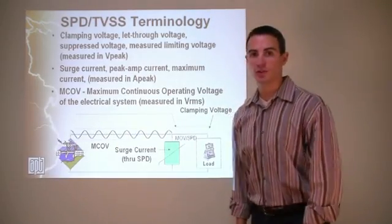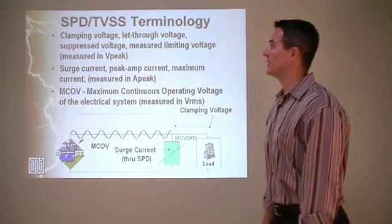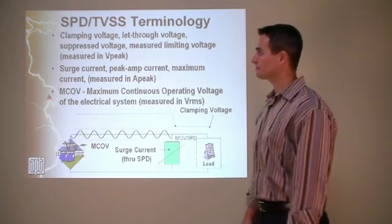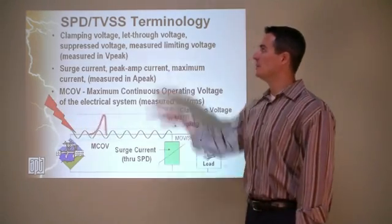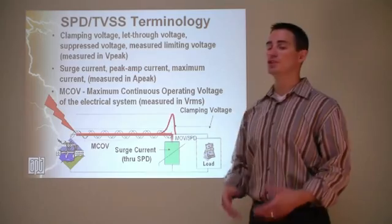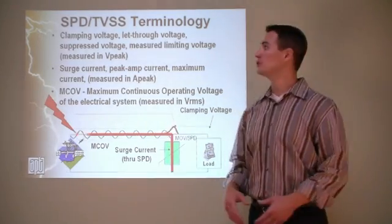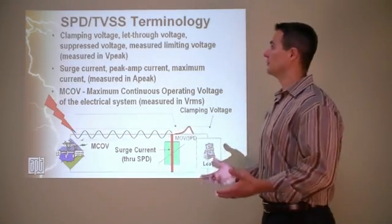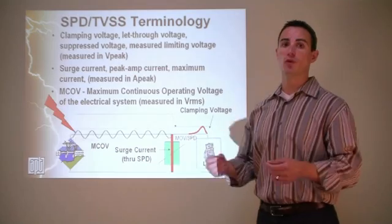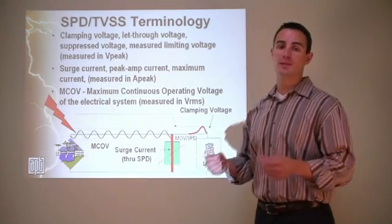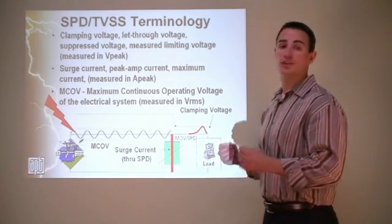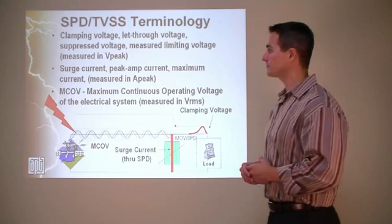In this module we're going to talk about basic SPD terminology. Clamping voltage is also known as lead-through voltage, suppressed voltage, or measured limiting voltage. It's measured in V-peak, and it's the voltage that the SPD actually allows into the circuit.